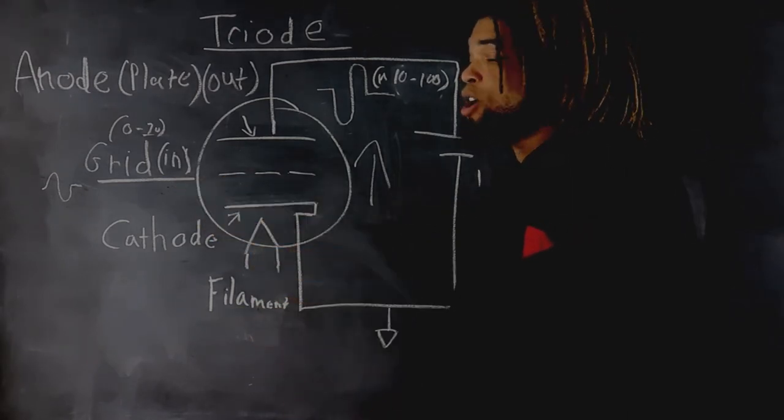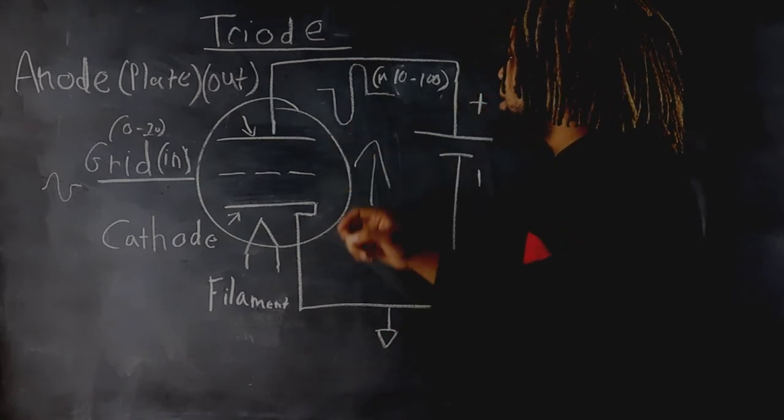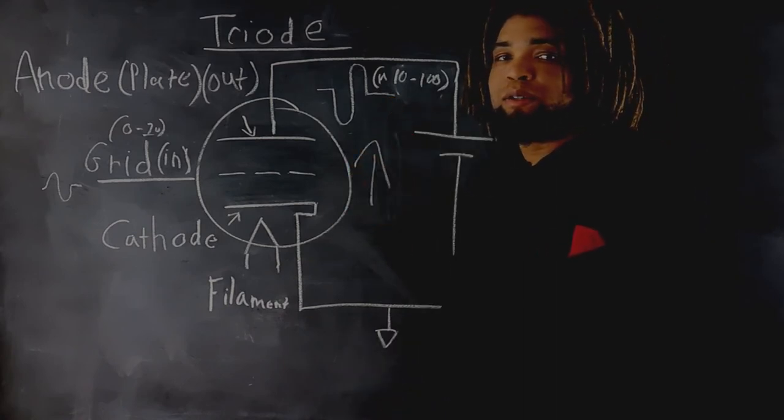The grid is also where your input comes in, and the plate is where your output signal goes out.